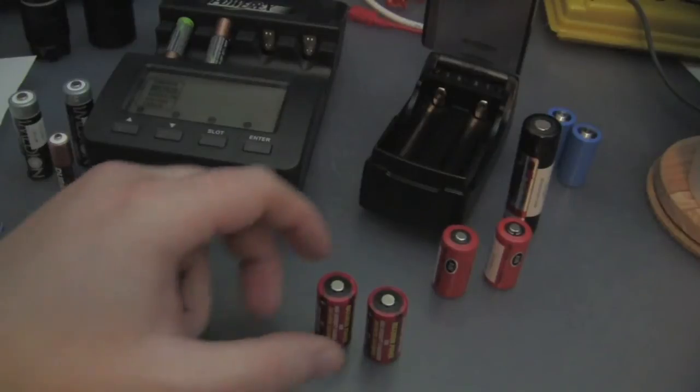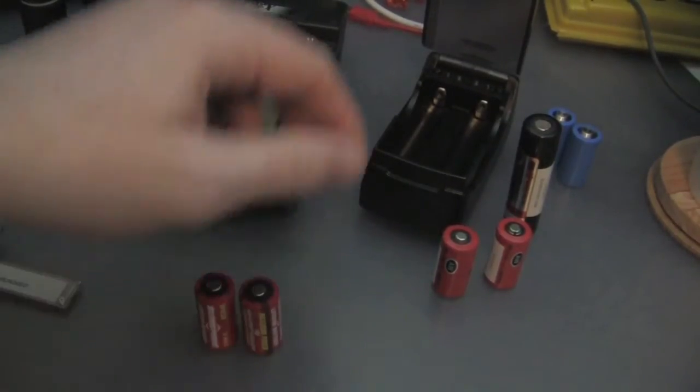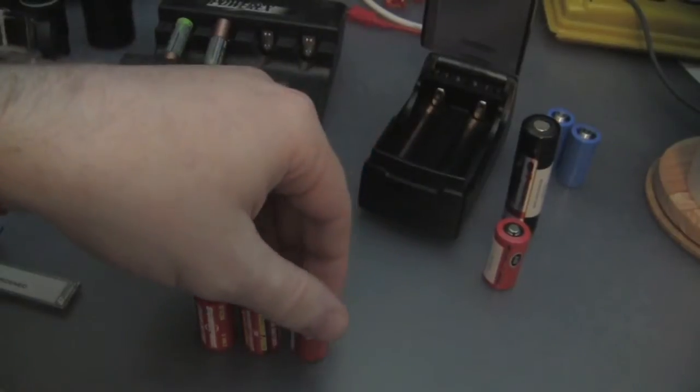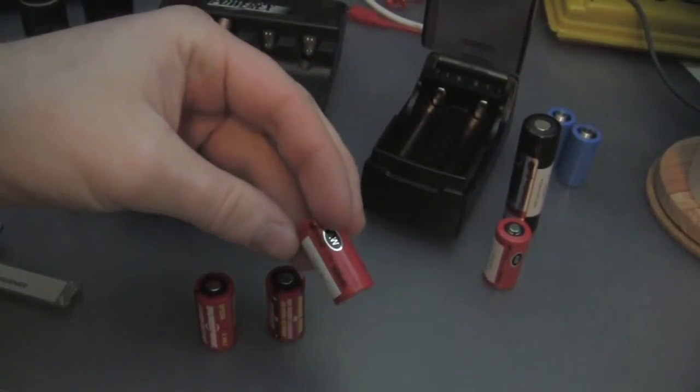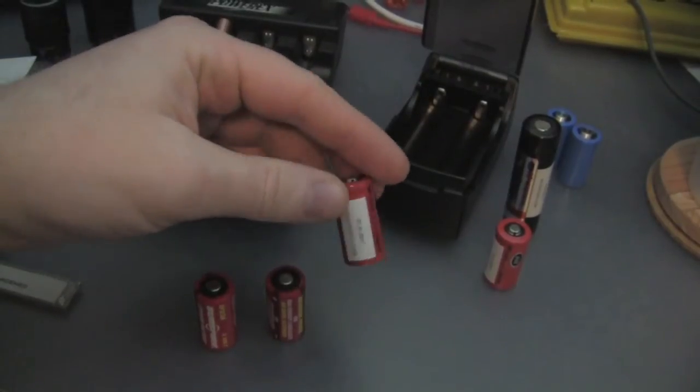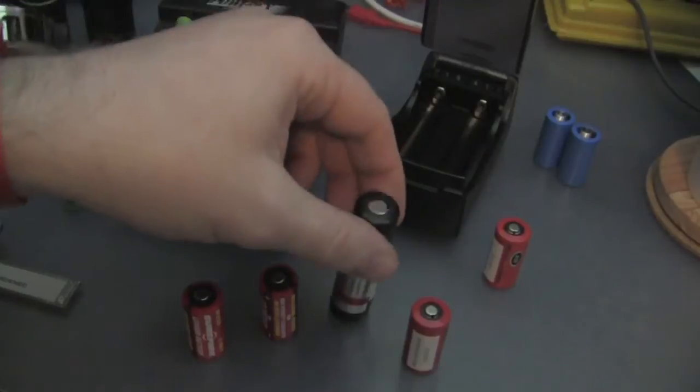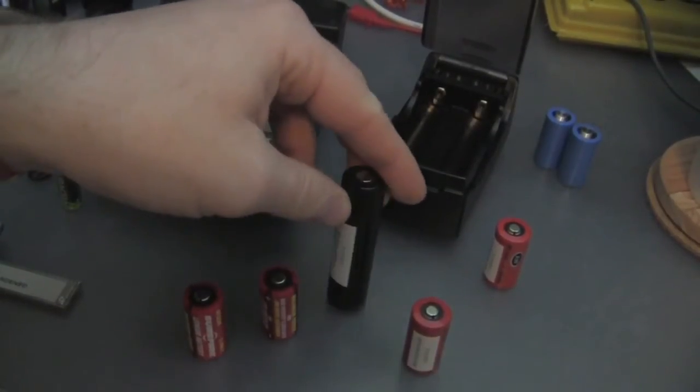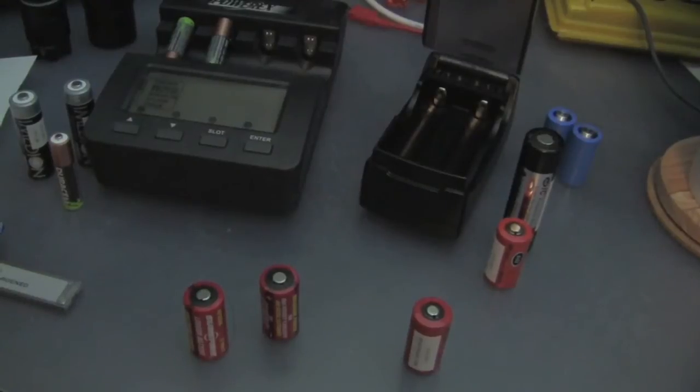Now, the lithiums, these are 3 volt batteries. This battery, which is the same exact size, and it's marked 3.7 volts, is really a 4.2 volt battery. This battery here is also a 4.2 volt battery. So, we need to take that into consideration when we're figuring out if our light can handle it or not.